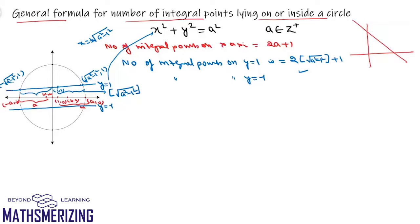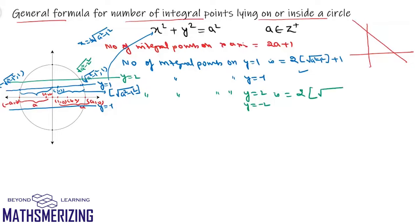For y = 2, everything is the same except the point of intersection is now √(a² - 2²). So the number of integral points lying on y = 2, and similarly on y = -2, is 2·⌊√(a² - 2²)⌋ + 1. This pattern continues all the way up to the line y = a.